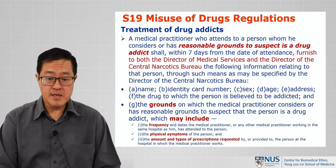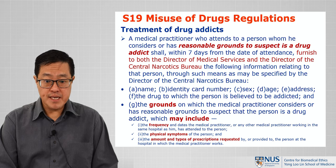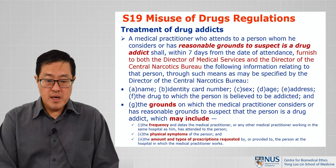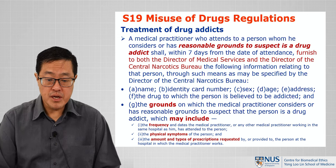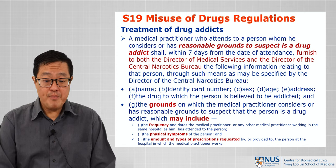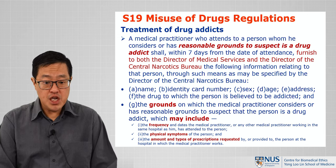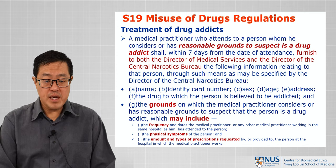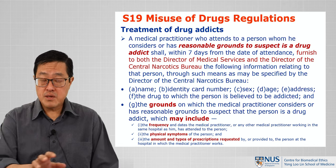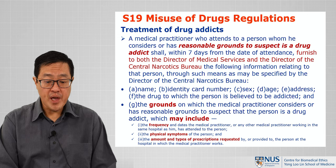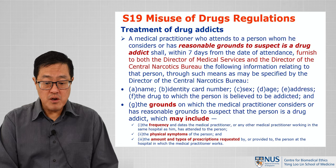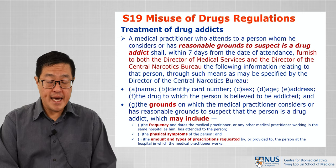What does Section 19 of the Misuse of Drugs Regulations say in terms of treatment of drug addicts? Bear in mind this particular provision talks about the medical practitioner — so only a medical practitioner, not other healthcare practitioners, not the public at large. When a medical practitioner attends to a person whom he considers or has reasonable grounds to suspect is a drug addict, the grounds are laid out in the regulations, and the word 'may include' means it's not all-encompassing — there can be other grounds.